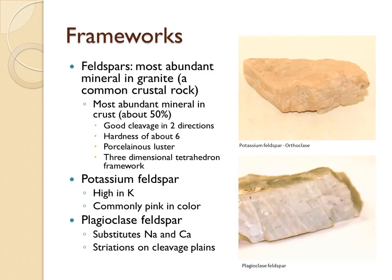Let's now look at common framework tetrahedron minerals. The most abundant group is called the feldspars. Feldspars are very common in granite and are a primary constituent of crustal rock. These are relatively hard minerals due to their rigid tetrahedral framework, with a hardness of about six. Most have what's called a porcelaneous luster — it looks a little like porcelain — and they have good cleavage, typically in two directions. Two common feldspars are potassium feldspar, which is commonly pink or salmon in color and often known as orthoclase, and plagioclase feldspar, which is richer in sodium and calcium. Plagioclase often has striations or little grooves that are part of the crystal structure on the cleavage planes.